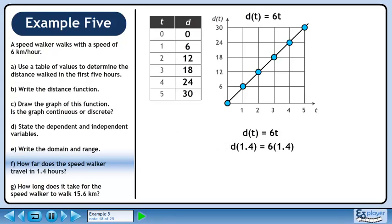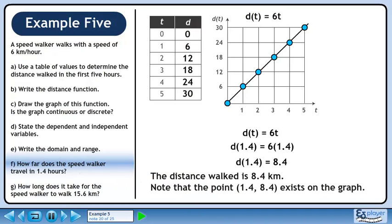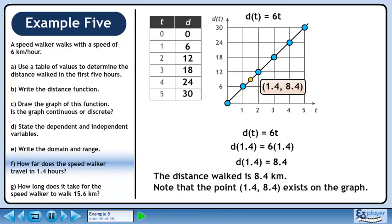Plug in 1.4 for t. Multiply to get 8.4. The distance walked is 8.4 km. Note that the point exists on the graph.